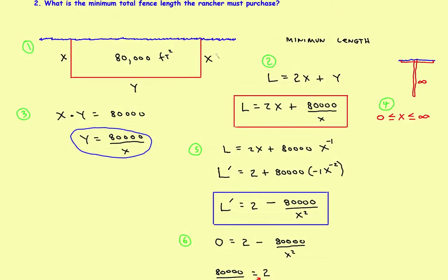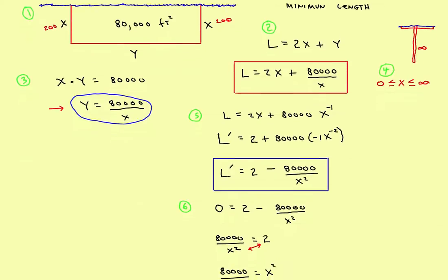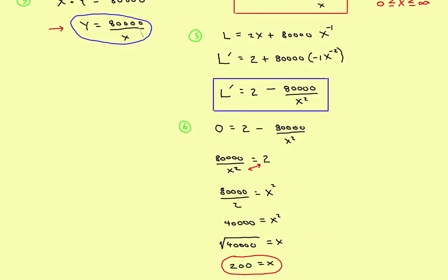Now that we know X equals 200, we can find Y. Plugging back into Y equals 80,000 divided by X: Y equals 80,000 divided by 200, which gives Y equals 400. So the corral dimensions are X equals 200 feet for each of the two vertical sides, and Y equals 400 feet for the side along the lake.